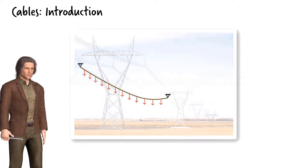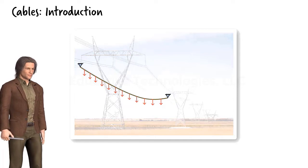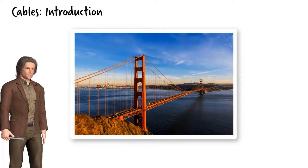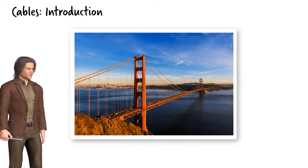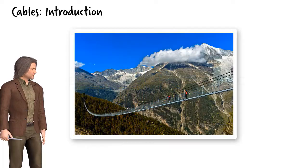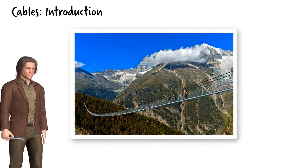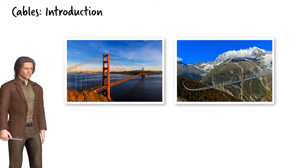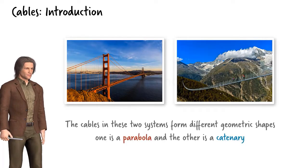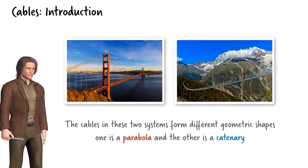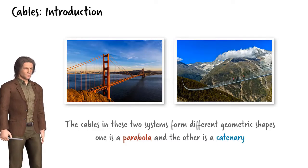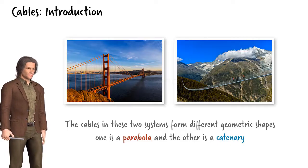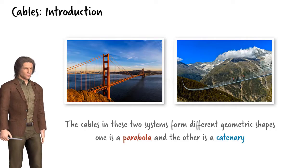It is important to note the difference between the shape of the cable when an external load is hanging from it, such as in the case of the Golden Gate Bridge, as opposed to when the cable is hanging freely under its own weight, like it does in the Schaal-Kuonen suspension bridge. The difference is in the mathematical equations that define the shape of the cables, and this matters because the shape of a cable affects its analysis. Let's pause here and examine this difference more closely.